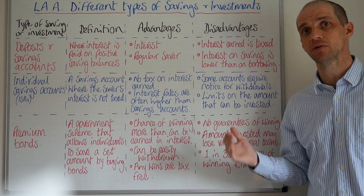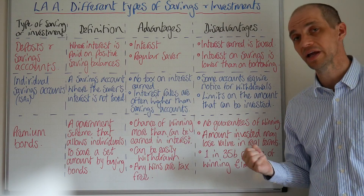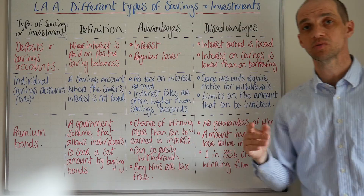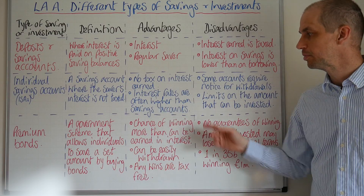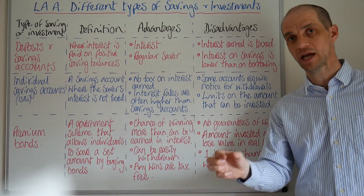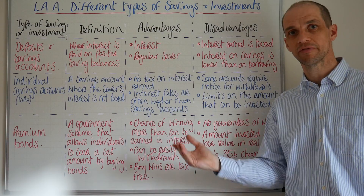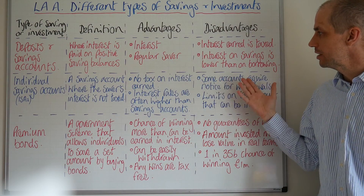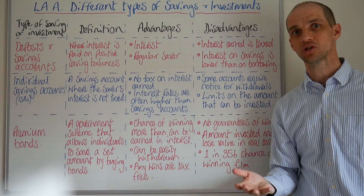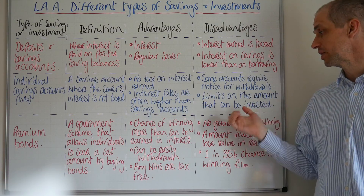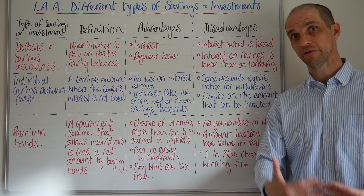The big advantage of individual savings accounts is that there's no tax on them. Interest rates are often higher than standard savings accounts, although you can get savings accounts where you lock your money away for perhaps three years and get good returns. Generally, a cash ISA will tend to offer a slightly higher interest rate than a general savings account — check what different banks are providing. The downside is that some accounts require notice before you can withdraw money, so your money isn't very liquid. There are also limits on the amount that can be invested, with an annual limit for each individual.